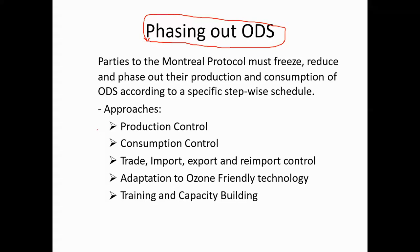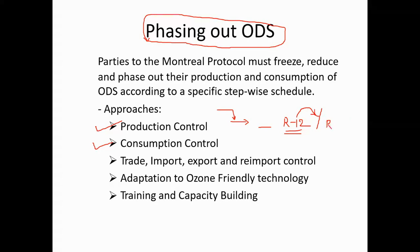The phase-out process involves: first, production control — reducing and then stopping the production of harmful CFCs globally. Then consumption control — if supply is reduced, demand falls. For example, R12 refrigerant used in domestic refrigerators has been gradually phased out and replaced with R134a.